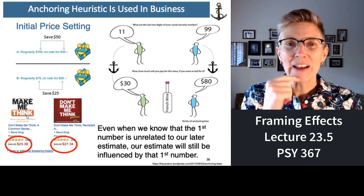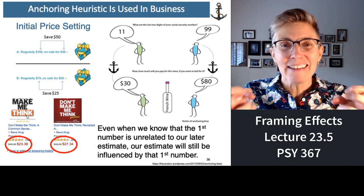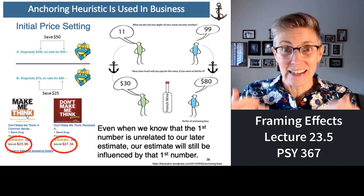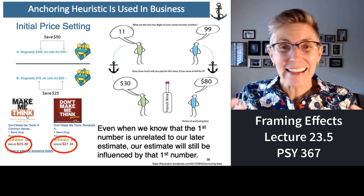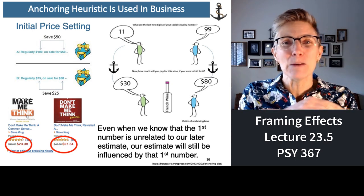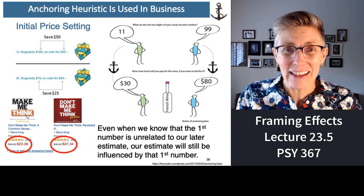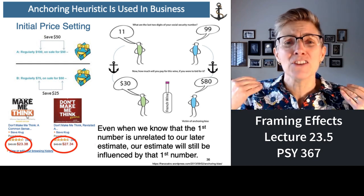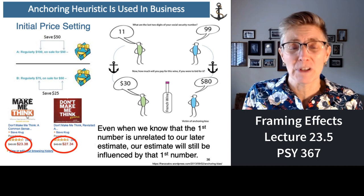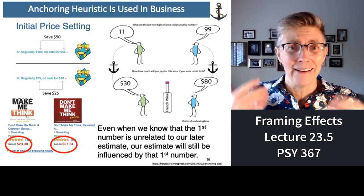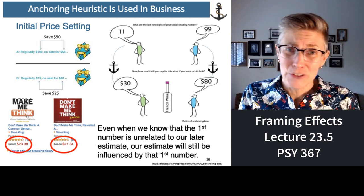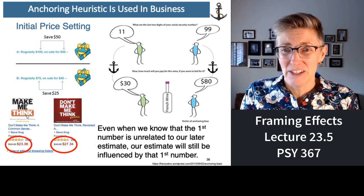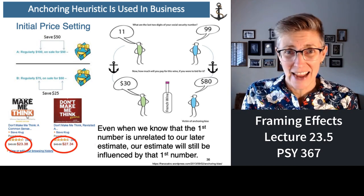As soon as you ask somebody for a number, that number anchors and influences later judgments — even if you know that number is totally unrelated to the judgment you're making. There's no relationship between the cost of a random bottle of wine and the last two digits of your social security number. But that's the anchoring heuristic.